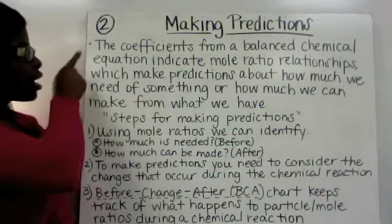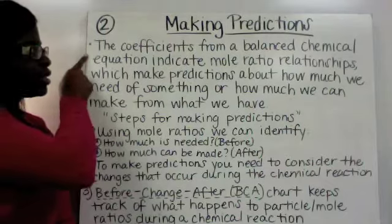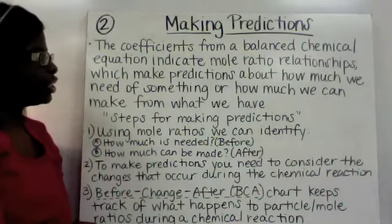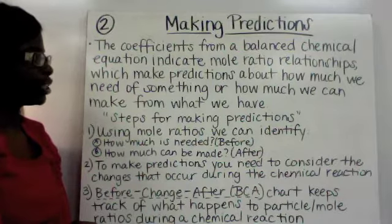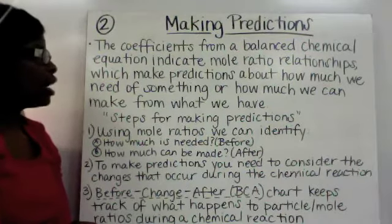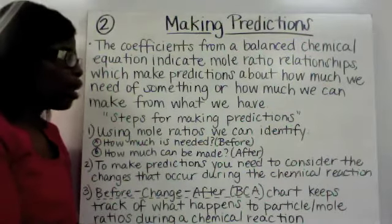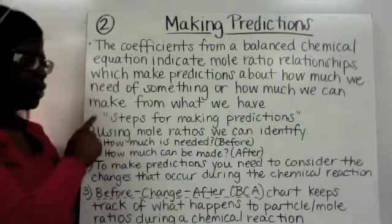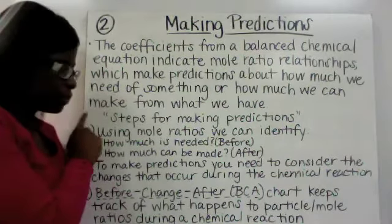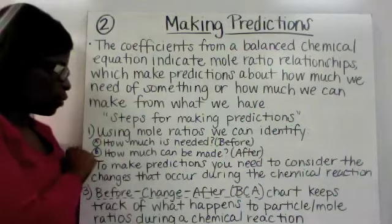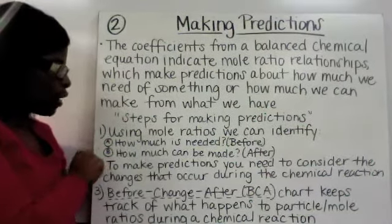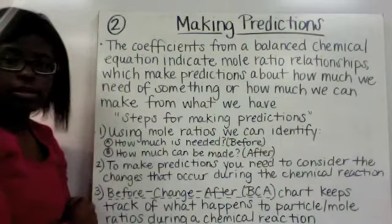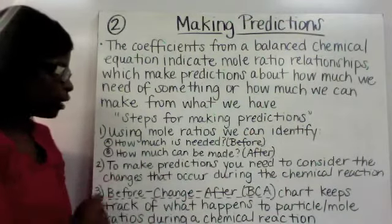Making predictions: coefficients from a balanced chemical equation indicate the mole ratio relationships, which make predictions about how much we need of something or how much we can make from what we already have. There are some steps for making predictions. Using the mole ratios, we can identify how much is needed — that is what we're going to call the before.